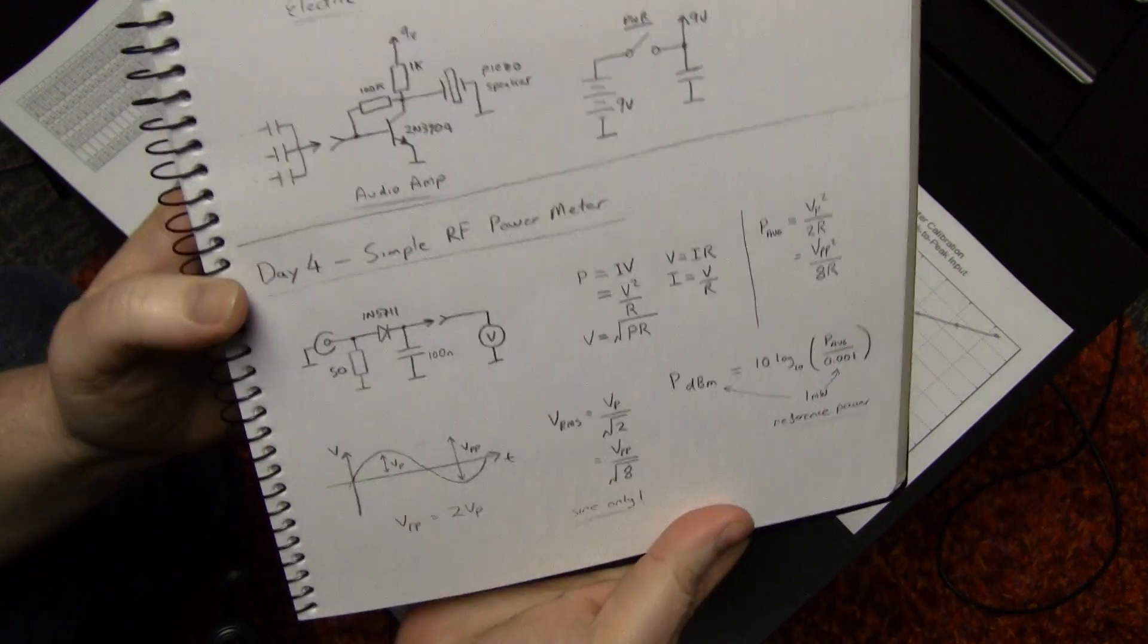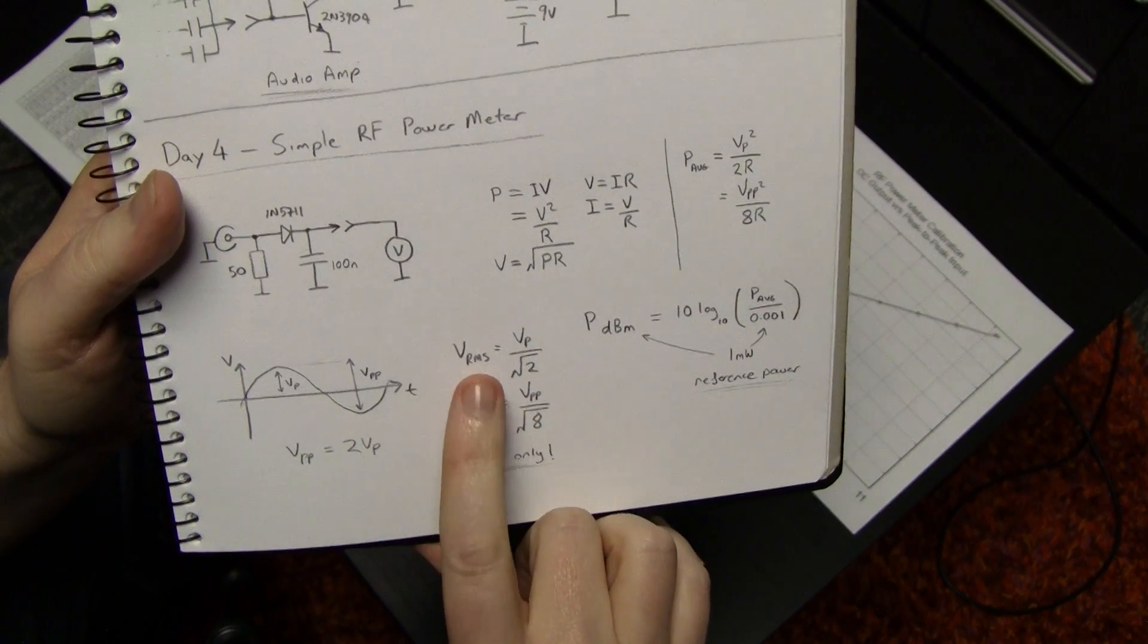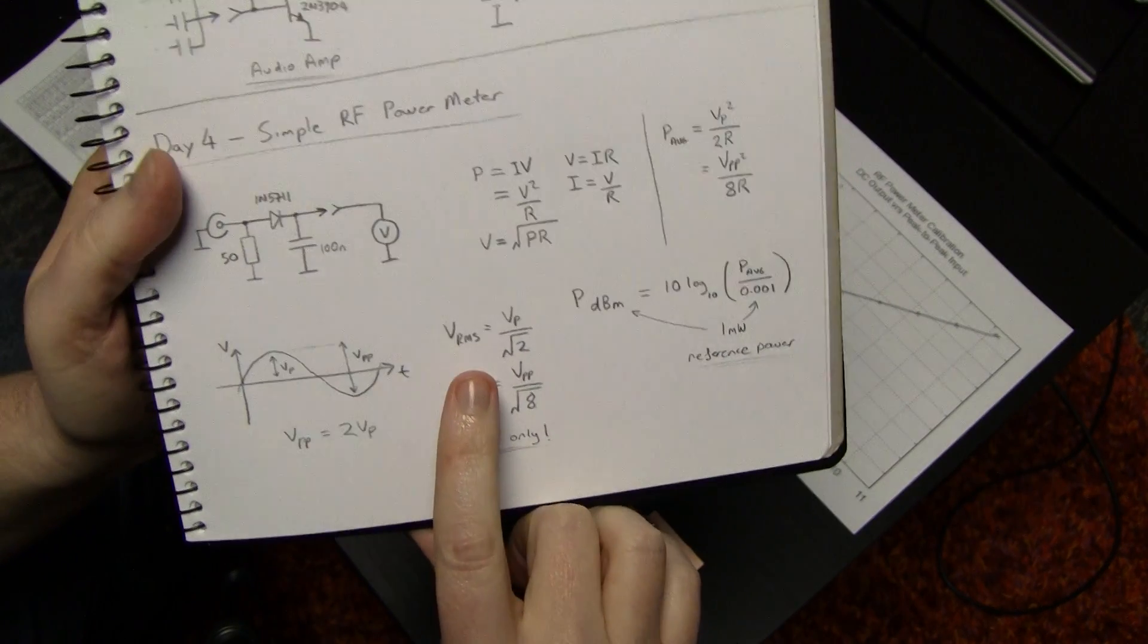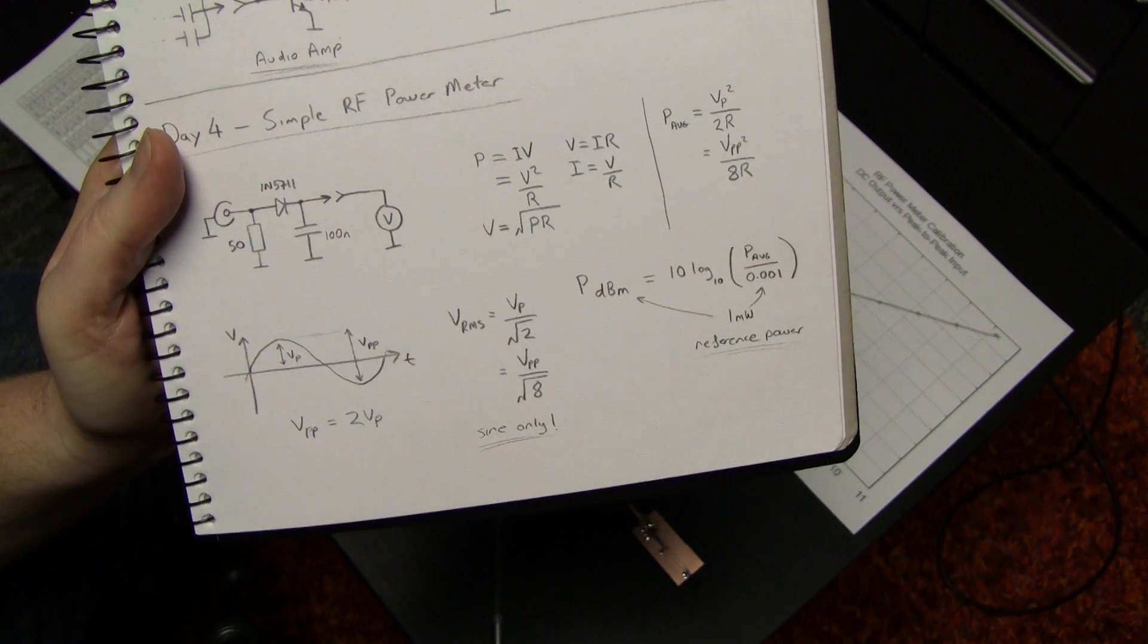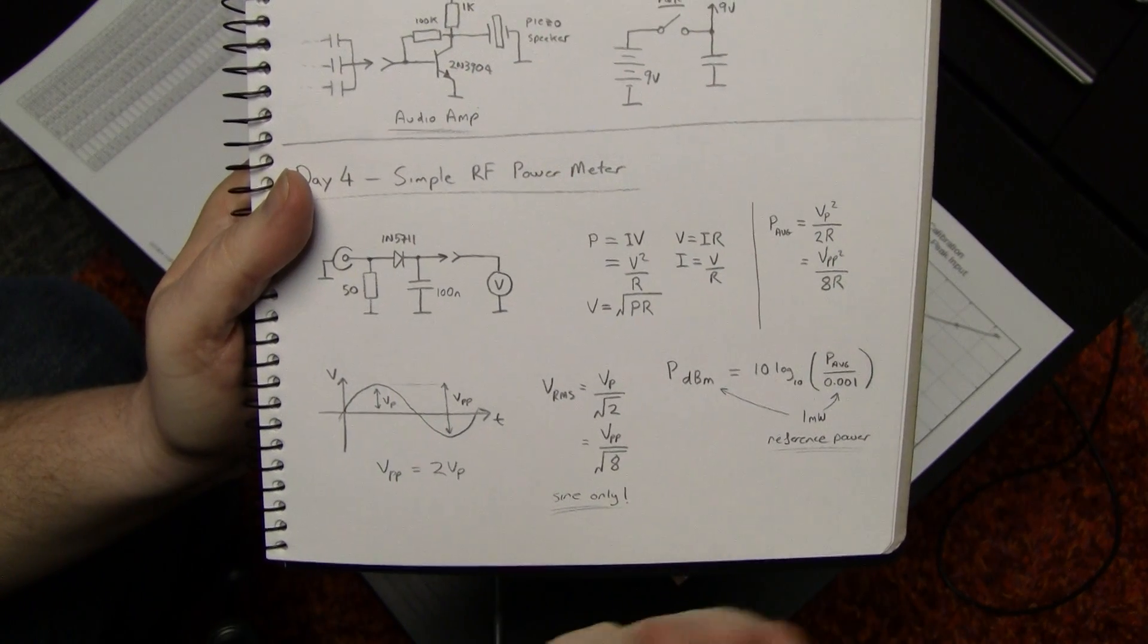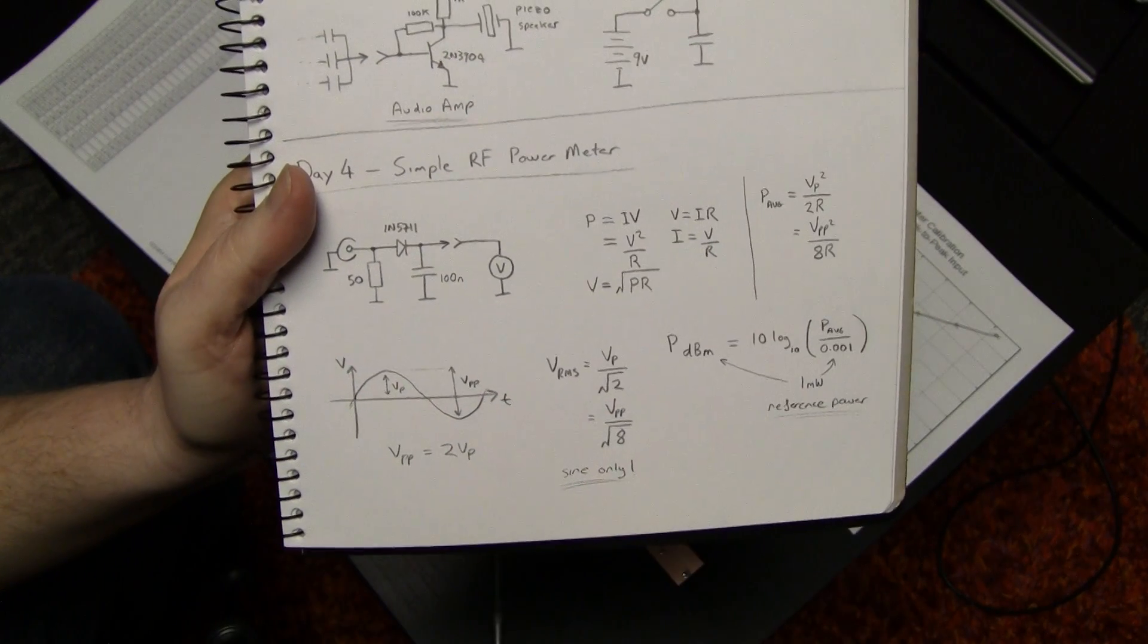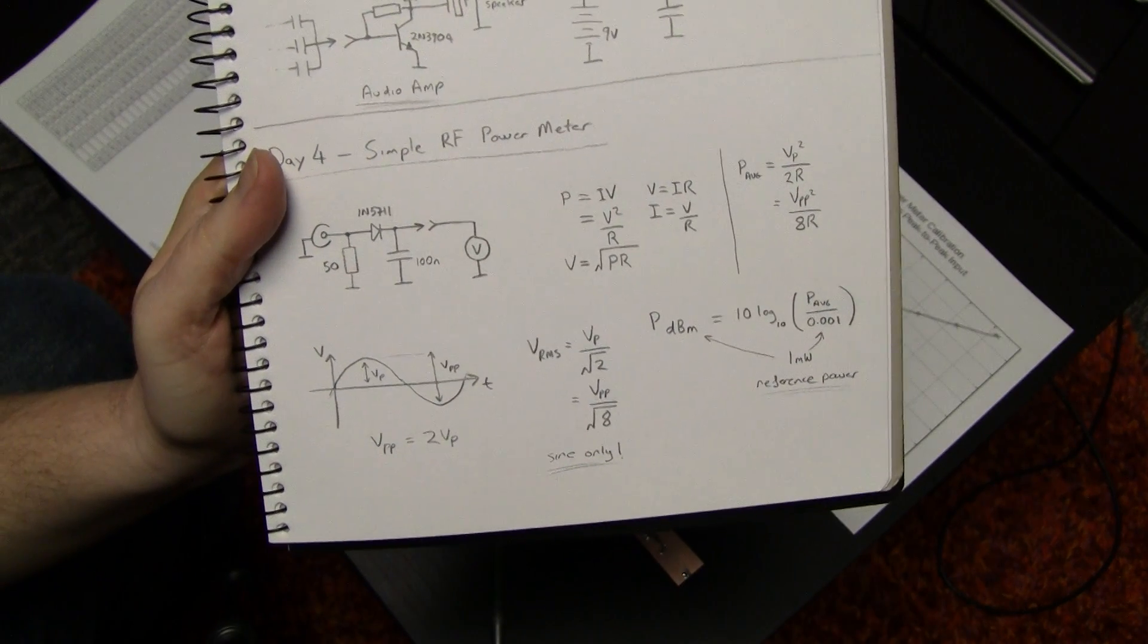So this is often confusing to people, this RMS idea. So RMS is kind of a way of defining an equivalent voltage that would put the same amount of power into a load as the real, is a DC voltage basically that would do the same work as an AC voltage.